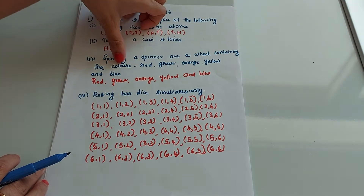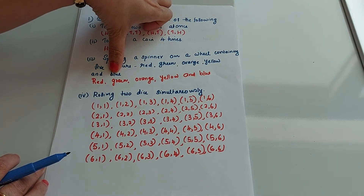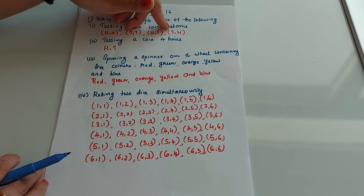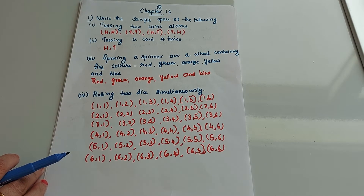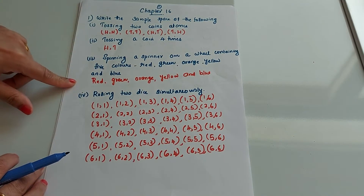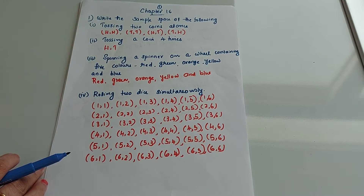Spinning a spinner on a wheel containing five colors — red, green, orange, yellow, and blue. What is the sample space? When spinning, either red, green, yellow, blue, or orange will occur. So our sample space is: red, green, orange, yellow, and blue.